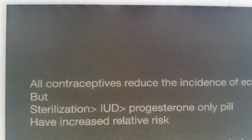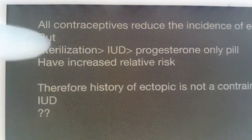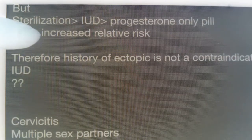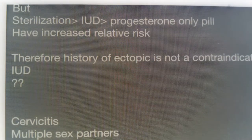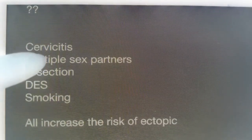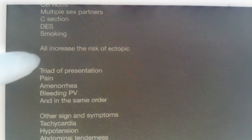A history of ectopic pregnancy is not as such a contraindication for IUD insertion. Other risk factors include cervicitis, multiple sex partners, previous cesarean section, D&C, and smoking — all of these increase the risk of ectopic pregnancy.